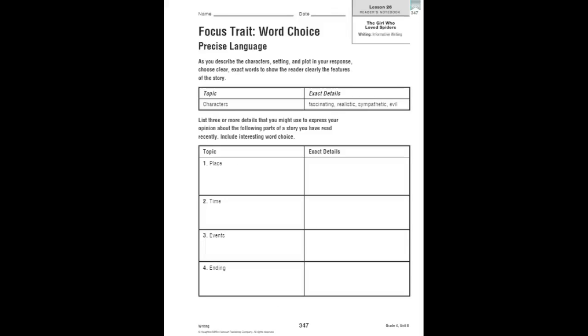Turn to page 347. We're going to practice using precise language. As you describe character, setting, and plot in your response, choose clear, exact words to show the reader the features of the story. You're going to list three or more details to express your opinion about parts of a story you've read recently — include interesting word choice. For example, the topic 'characters' could have details like fascinating, realistic, sympathetic, and evil. Look for precise language details for a place, a time, an event, and an ending in a story you've read recently.